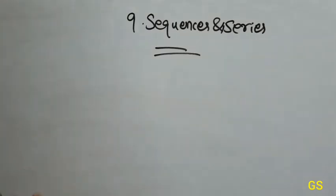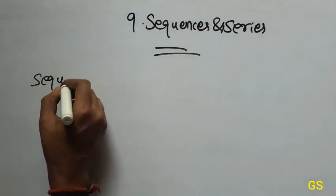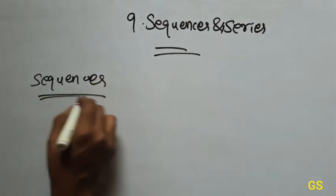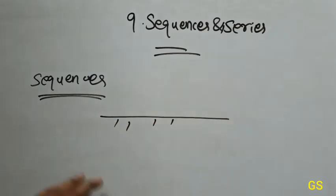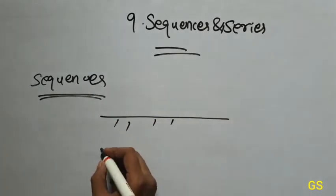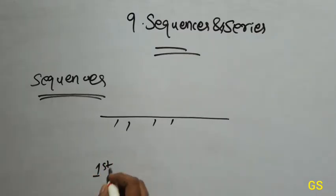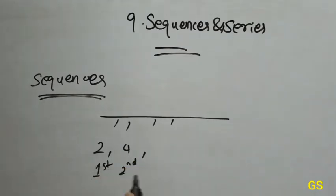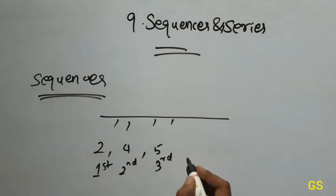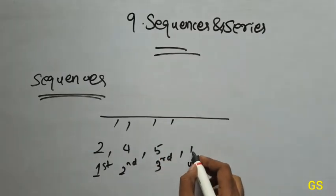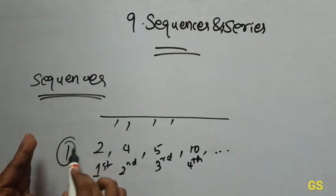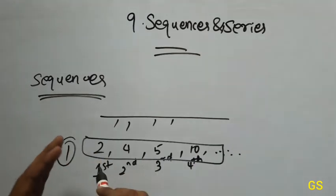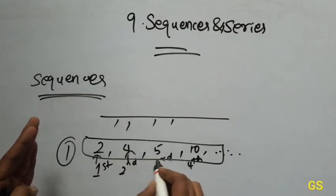Now, sequence — what is the meaning? Sequence is not just a line or format. That means something like arrangements: 9 and so on. This is a sequence.